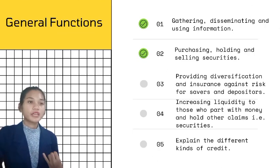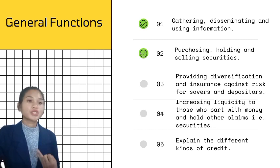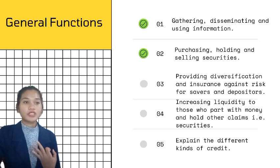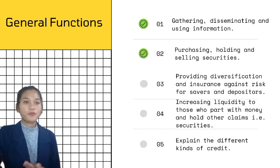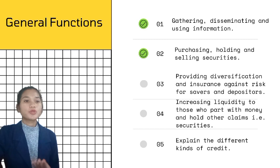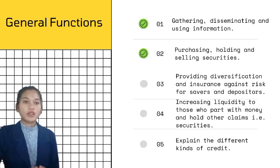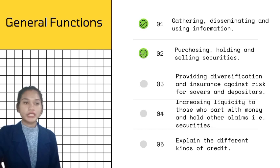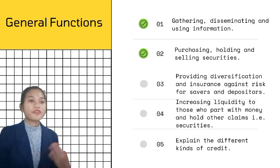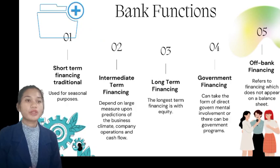The general functions include: first, the gathering, disseminating, and using information; second, purchasing, holding, and selling securities; third, providing diversification and insurance against risk for savers and depositors; fourth, increasing liquidity to those who part with money and hold other claims such as securities; and the last is explaining the different kinds of credit. There are five functions in accordance with their classification.